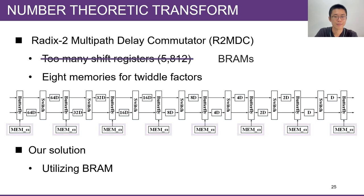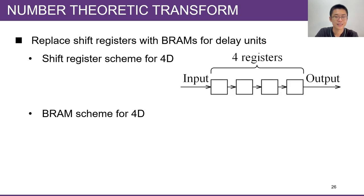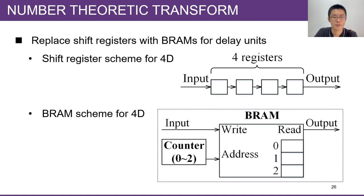First, we use the BRAM to implement the delay units instead of shift registers. Here is an example explaining how we replace shift registers with BRAMs for delay units. We use 4D, which means a delay of four cycles, as an example. The shift register scheme uses four cascaded registers. Each bit is shifted one stage each cycle, and each bit is stored for four cycles before shifted out. The BRAM scheme uses the BRAM and a counter with a range of 0 to 2. The value of this counter is used as the address pointer for the BRAM. This animation shows how it works.